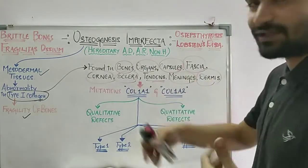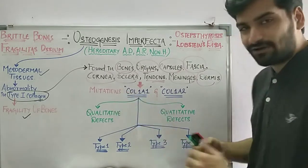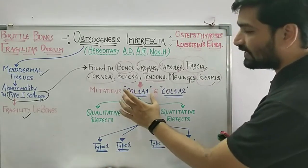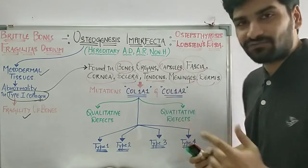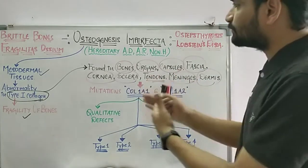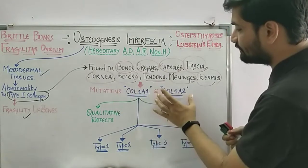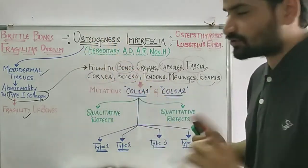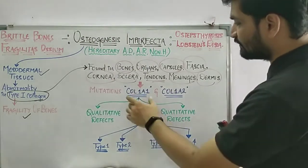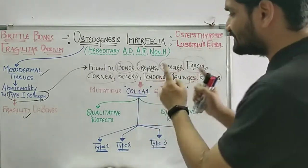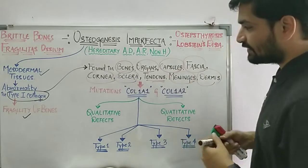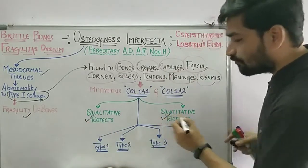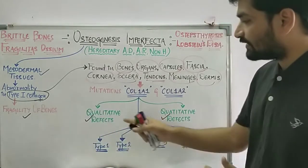Regarding gene mutations — in competitive exams, you will be asked about COL1A1 (collagen 1A1) and COL1A2 (collagen 1A2) genes. Mutations in these genes are responsible for osteogenesis imperfecta. Due to these mutations, there will be two types of defects: first, a qualitative defect, and second, a quantitative defect.